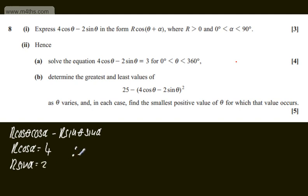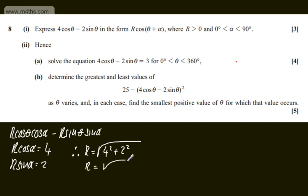Therefore, r will be equal to the square root of 4² plus 2². That gives us the root of 16 plus 4, which is root 20, and we can write root 20 as 2root5.